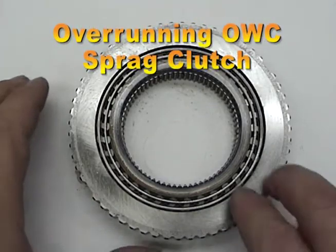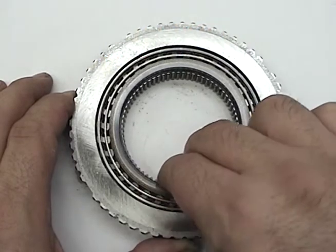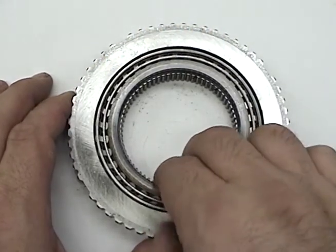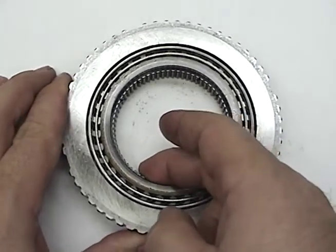The overrunning or one-way sprag clutch allows rotation in one direction only. This sprag allows the inner race to rotate counterclockwise and prevents it from rotating clockwise.